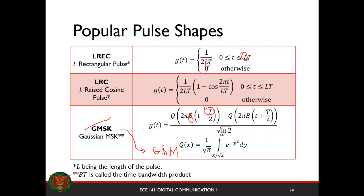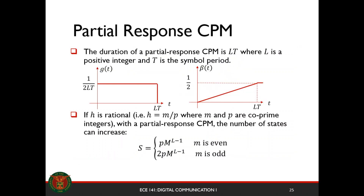Let's look at the partial response CPM and its interesting properties. The duration of the pulse is L·T, but the area is still the same at one half. If h is still rational, by extending the pulse duration we actually create more memory in our system. We increase the memory by a factor of M raised to L minus 1, where M is the number of symbols in our constellation and L is the length of the pulse.